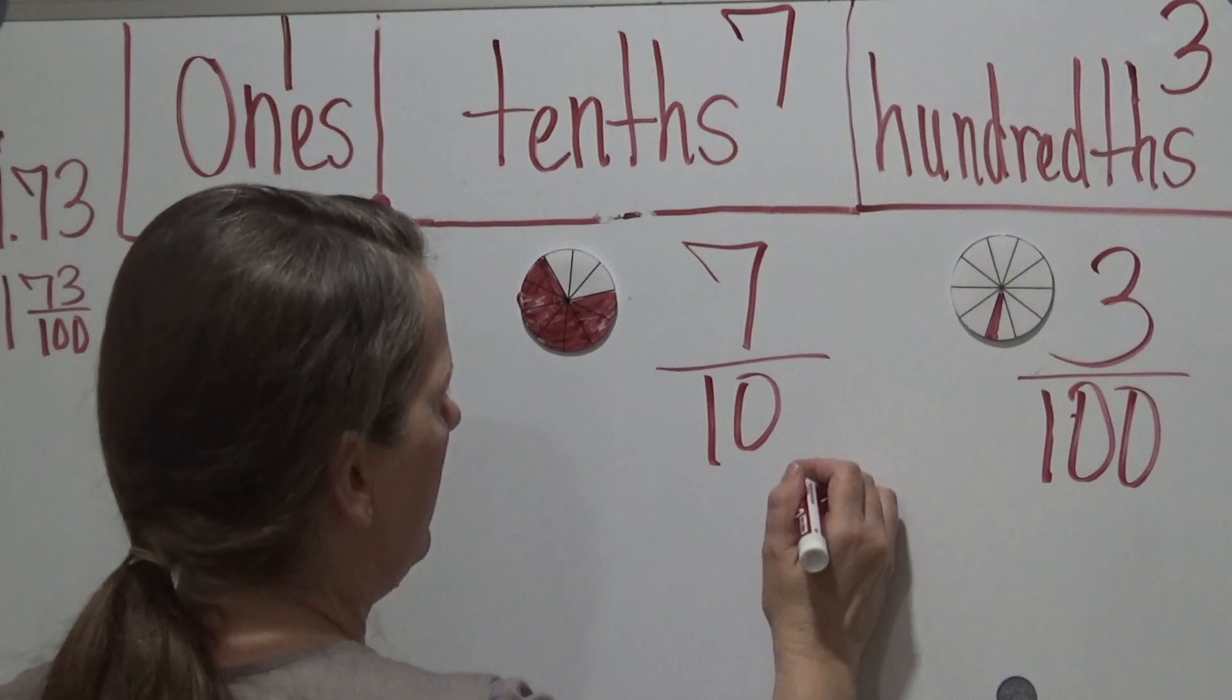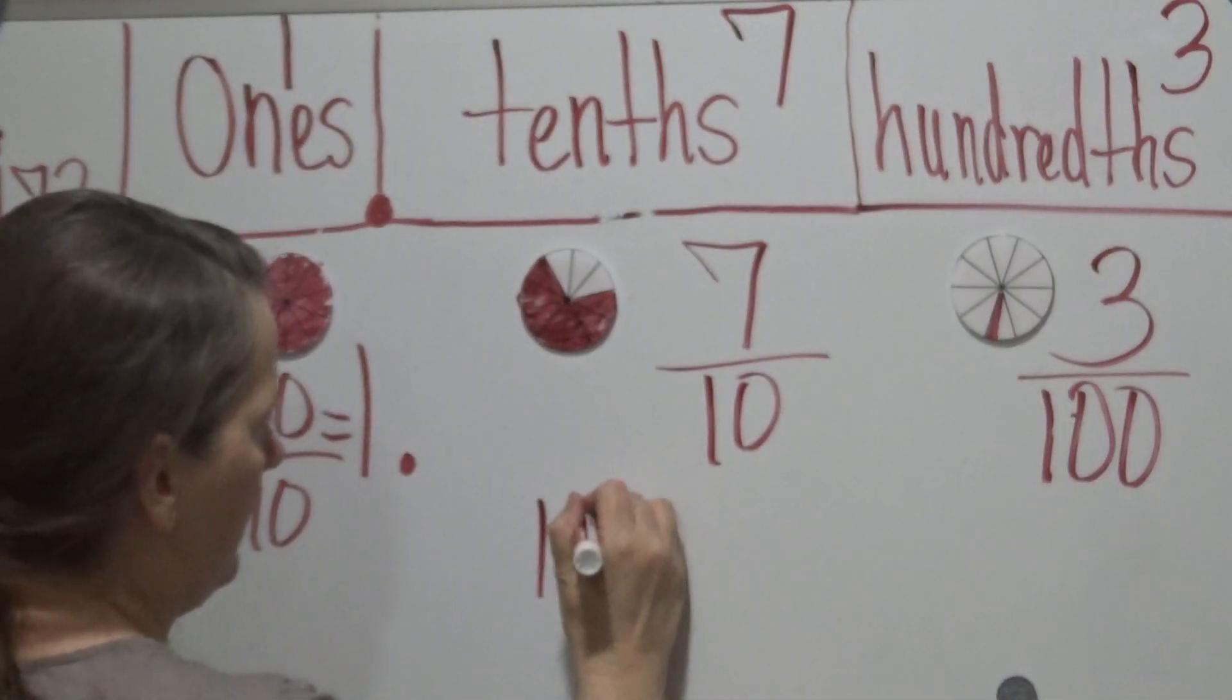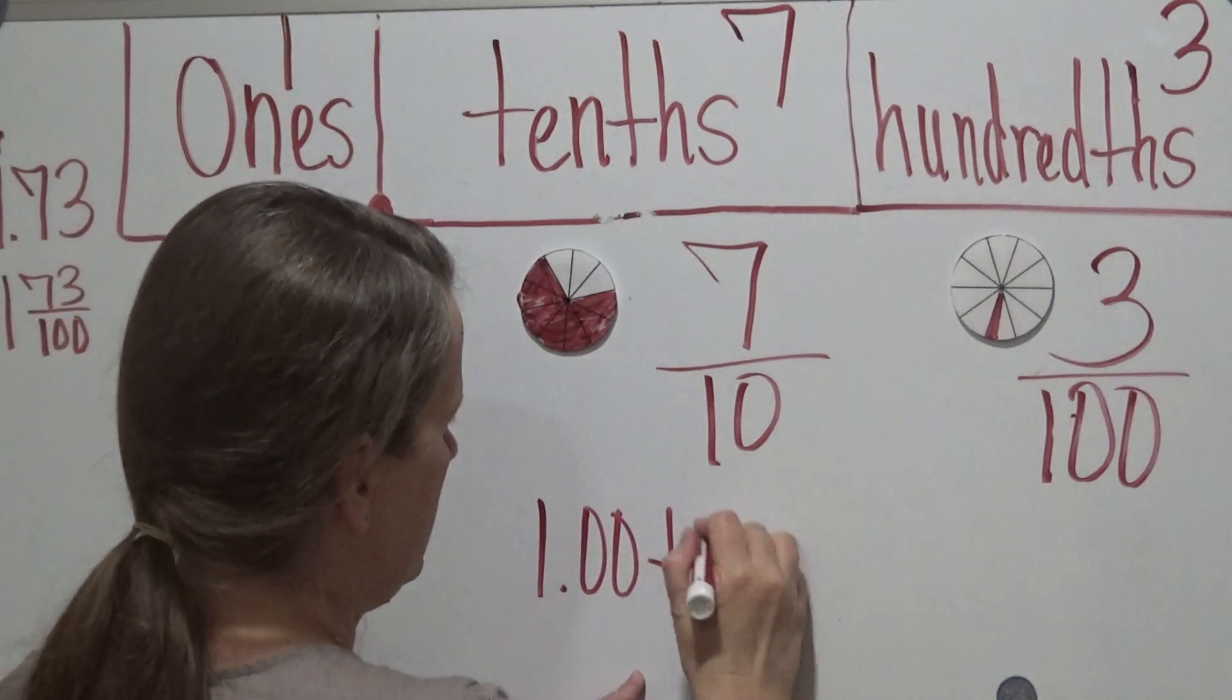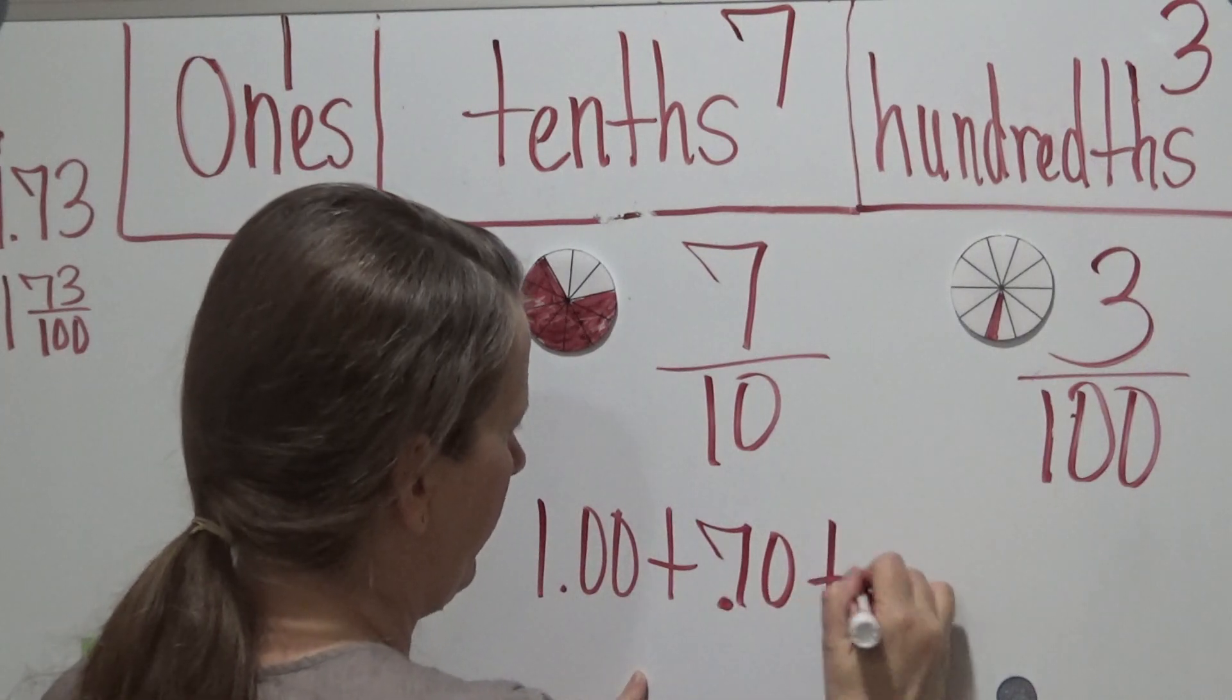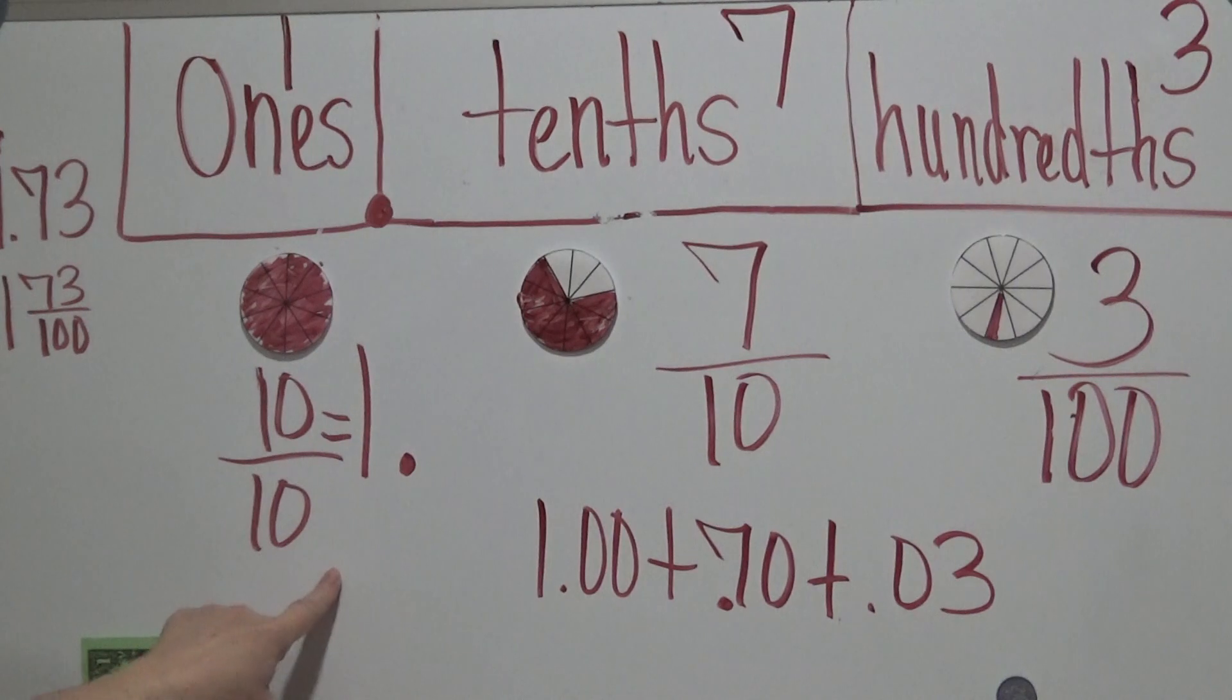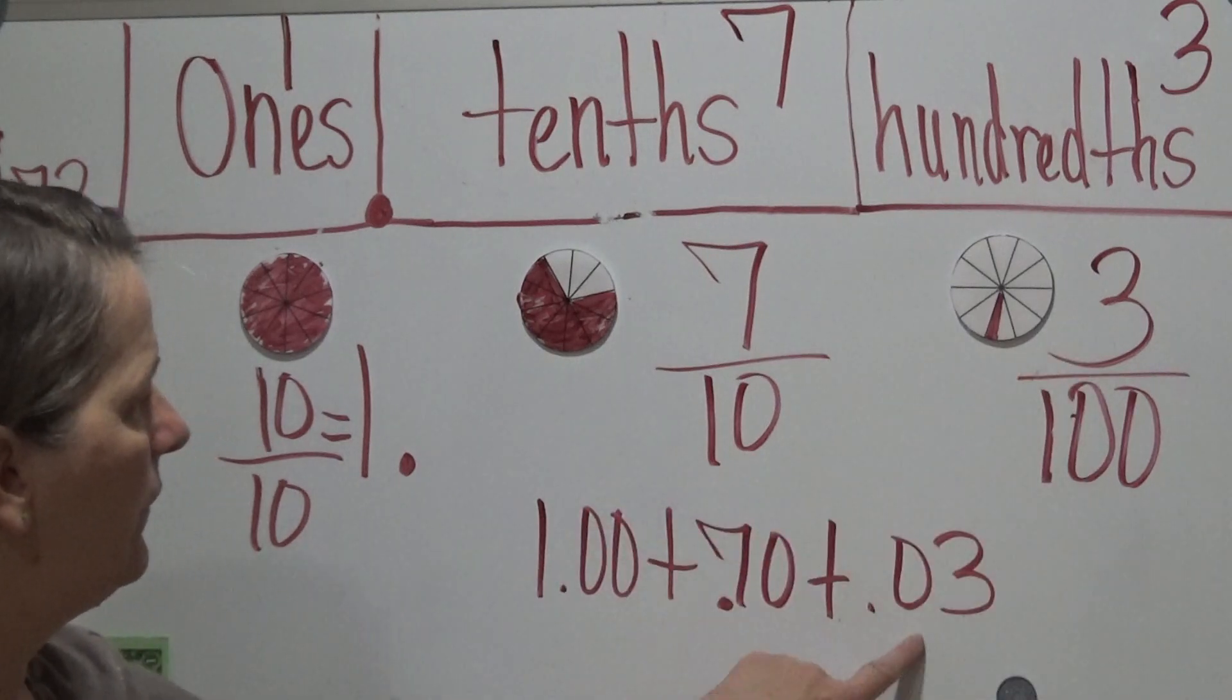So when we add it up, it would be $1 plus 70 cents plus 0.03. So that's what this is actually representing: $1, 70 cents, and 3 cents.